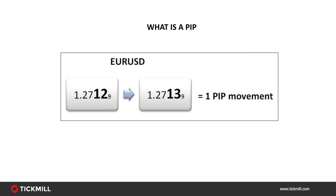A pip refers to the unit of measurement used to express the change in value between two currencies. PIP stands for Percentage In Points. Different currency pairs are quoted to a different number of decimal places. If the EUR/USD moves from 1.27129 to 1.27139, that's a 0.00010 US dollar change — equal to one pip, which is one percent of one percent. Many brokers today quote prices to five decimal places; that 0.1 of one pip is referred to as a pipette.